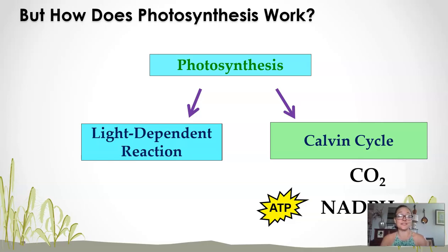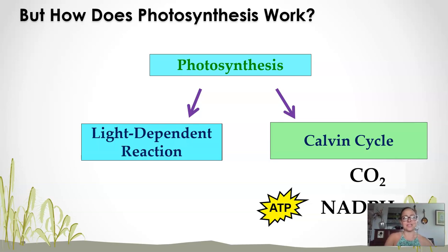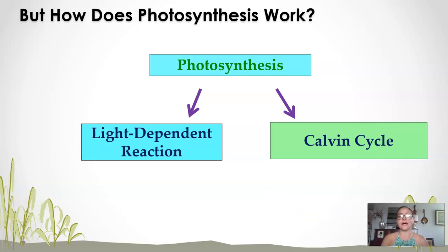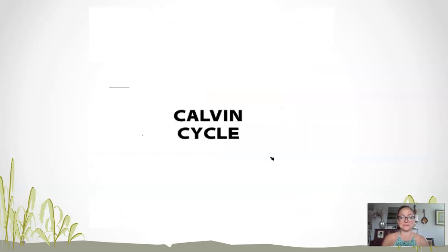So if you put a plant in a cupboard or in the shade and it doesn't get enough sunlight, it will stop growing because it can't produce its organic molecules. It does not mean the Calvin cycle happens only during the day — if you put a plant in the dark, the Calvin cycle will stop. Okay, let's go ahead and see how this works.